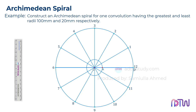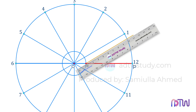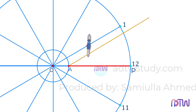Since we are told to draw the spiral for one convolution, we need to divide the distance between points A and P into the same number of parts as we split the circle, which is 12 in this case. To do so, draw an inclined line at an acute angle, take a compass, adjust it to some length, and cut this line into 12 equal parts as shown.